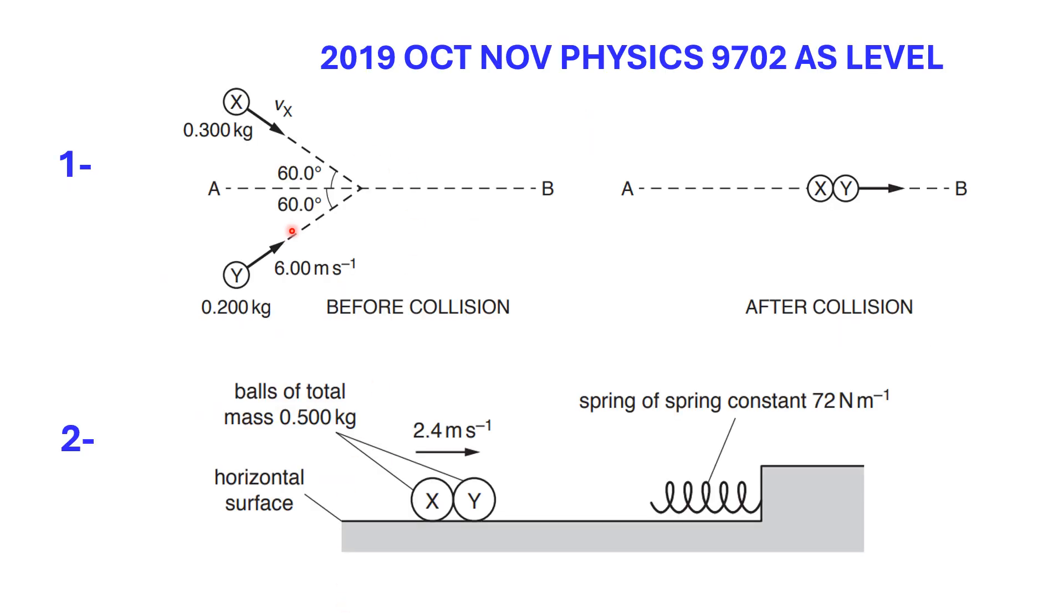This question is a cascade of events. Simply saying, two balls are coming along from different sides, collide with each other, and move together towards a spring. And after the impact, the spring is compressed. And I'm thankful the question doesn't go farther than this.